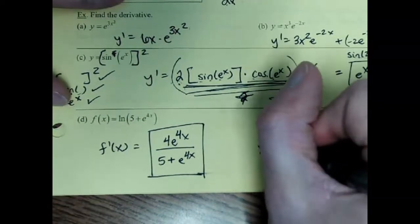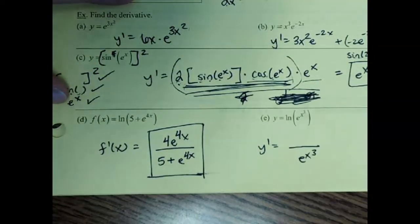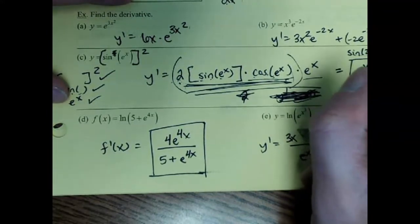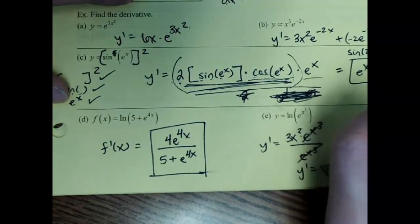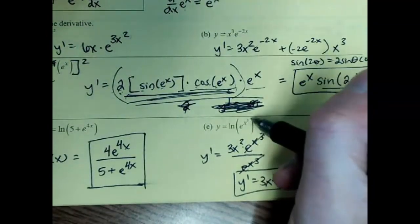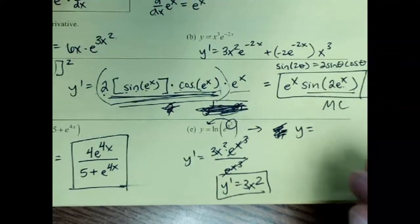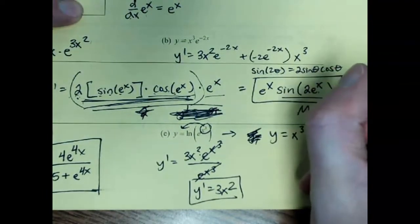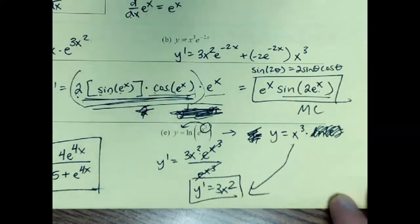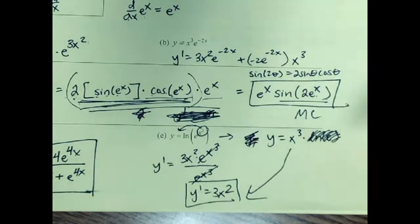The next one: ln of e to the x cubed. You could put what's inside the log on the bottom, then chain rule on top — the derivative of the exponential gives 3x squared on top, which reduces, giving 3x squared. Or you could use log properties first: bring the exponent x cubed down to the front, leaving x cubed times ln of e, and ln of e equals 1, so that cancels. Then the derivative of x cubed is also 3x squared. Either approach works — using properties sometimes makes the calculus easier.